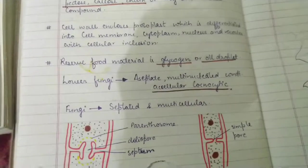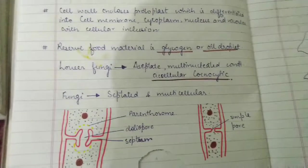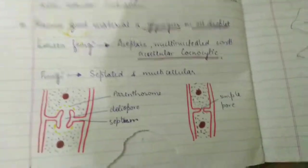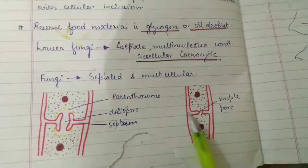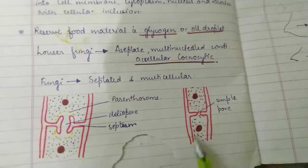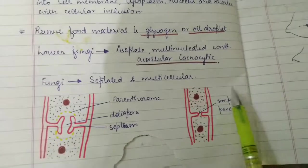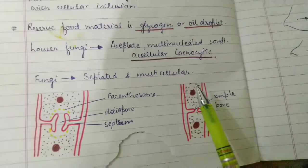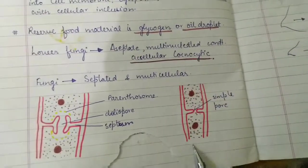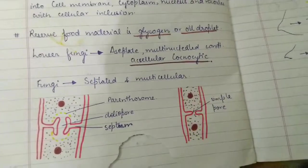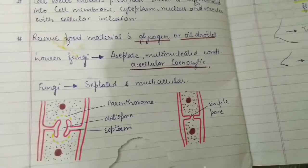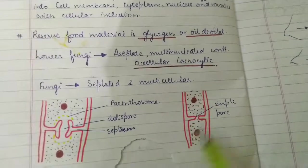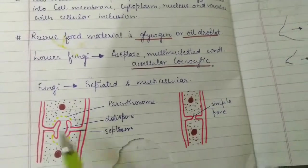In higher fungi, a septate condition is present — walls are present within the long filament. This wall makes them septate and multicellular, because a long tube with septa present means there are two distinct cells rather than a single acellular coenocytic structure.